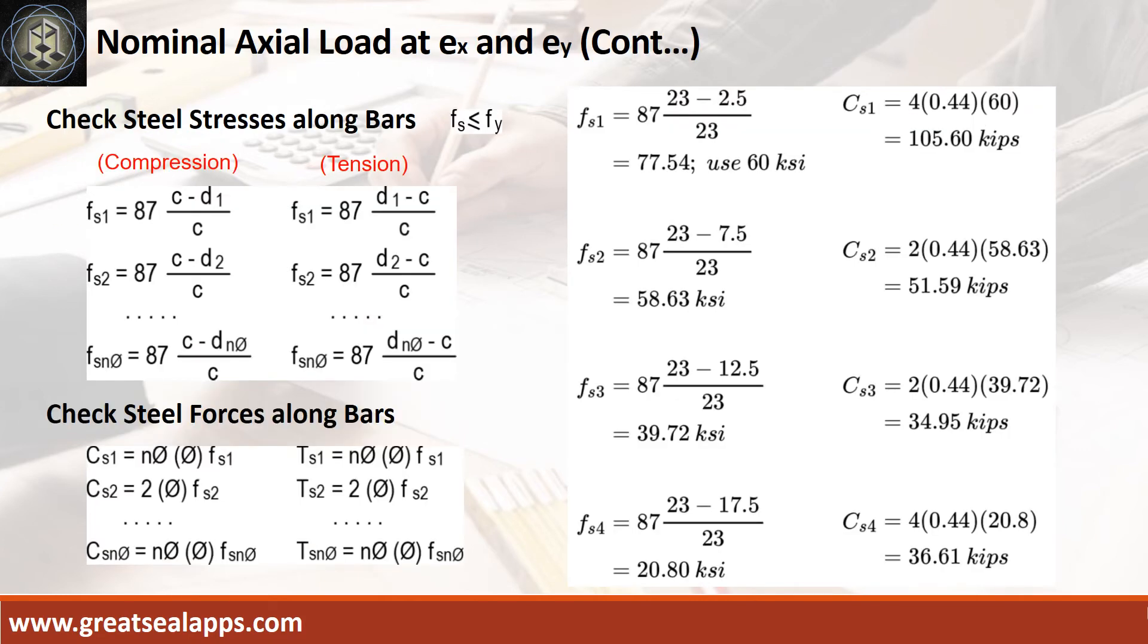Follow the given computations for stresses and forces of each layer. Stress at D sub 1 is 60 kips and compressive force at 105.6 kips. Stress at D sub 2 is 58.63 kips and compressive force at 51.59 kips. Stress at D sub 3 is 39.72 kips and compressive force at 34.95 kips. Stress at D sub 4 is 20.8 kips and compressive force at 36.61 kips.